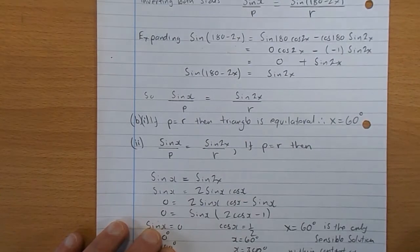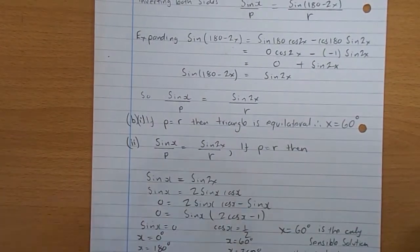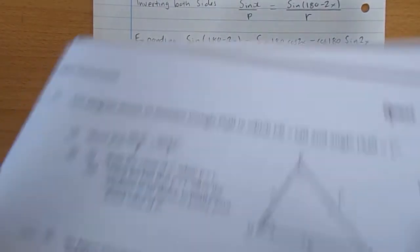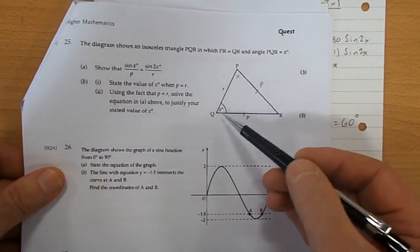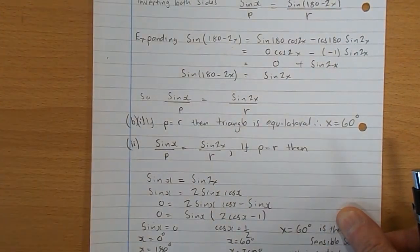State the value of X when P equals R. Well, if P equals R, we have an equilateral triangle. They're all the same. So the size of X would be 60 degrees.